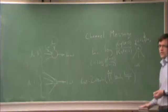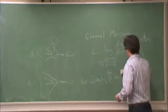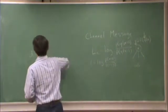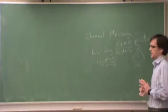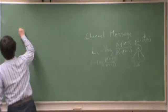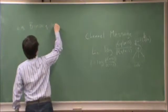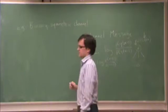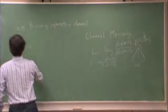This is a very important message, because it expresses the information you glean from channel observations of whatever codeword was transmitted, and secondly, this message is what helps you start the decoding process. Let's have an example. In a binary symmetric channel — the binary symmetric channel is a special kind of discrete memoryless channel — I hope you'll remember this description of it.